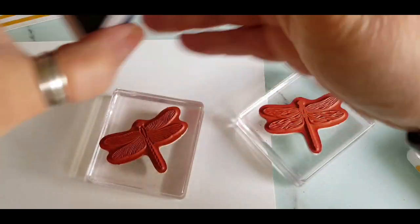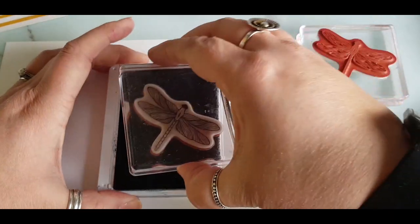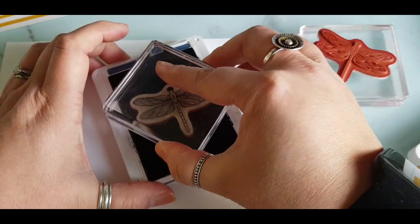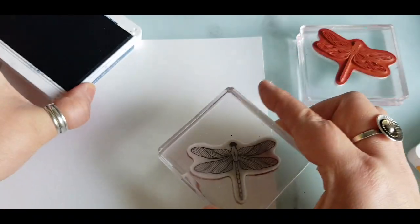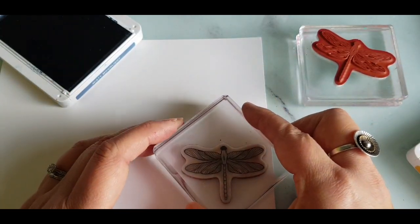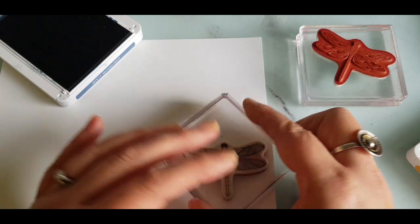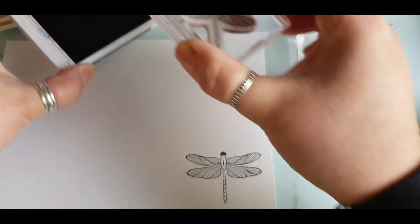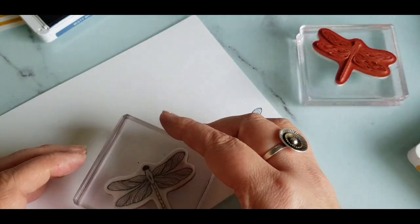Bringing in my Misty Moonlight ink and the Dragonfly Garden stamp set and these are the two dragonflies that come in the set. Stamping one of the images, I'm going to do this twice so I've got one for each card.